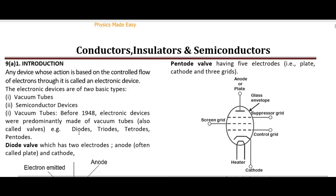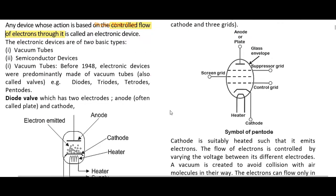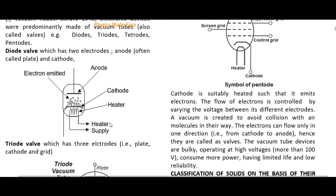Any device whose action is controlled by the flow of electrons is called an electronic device. There are two basic types of electronic devices: vacuum tubes and semiconductors, and we should add a third type — integrated circuits. Before 1948, electronic devices were predominantly made of vacuum tubes, for example diodes, triodes, tetrodes, and pentodes.